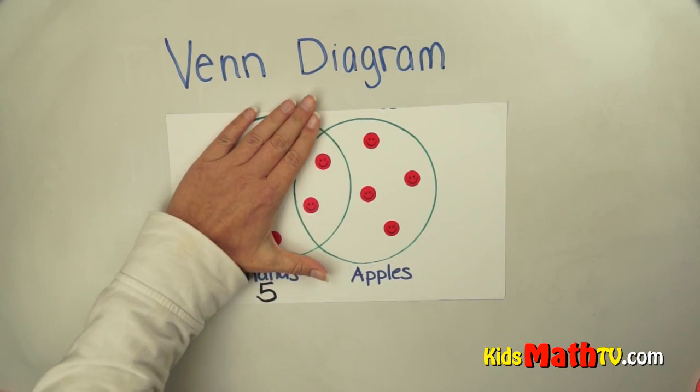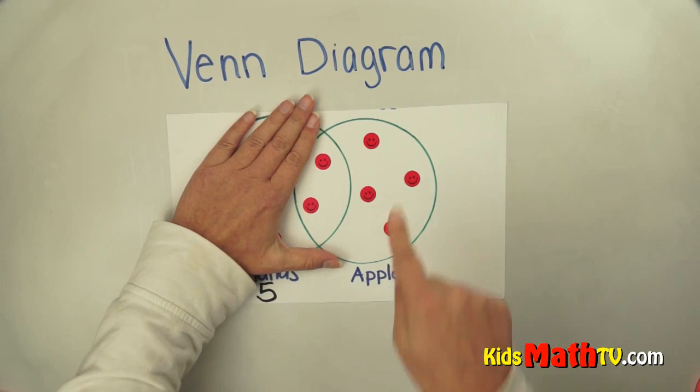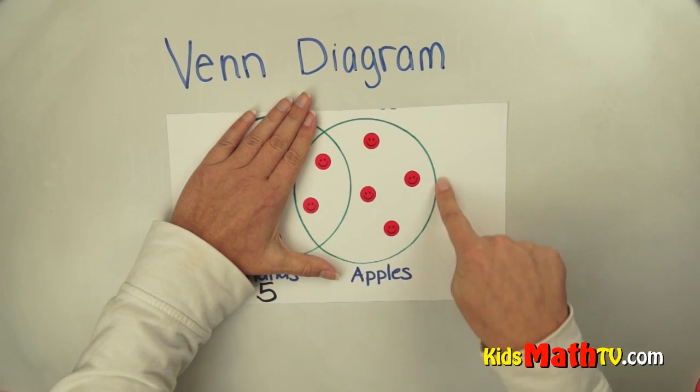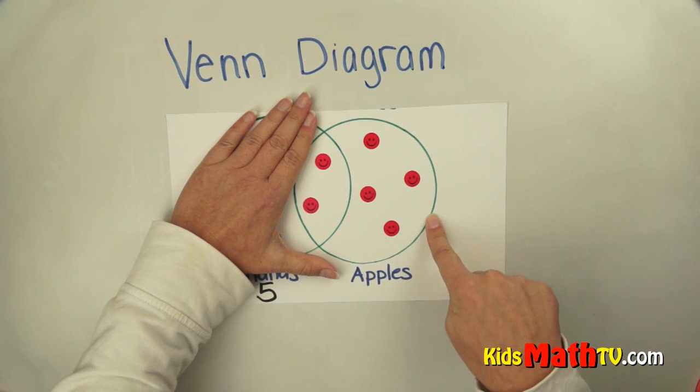Let's look at just the apples. Who likes apples? So this is the apple circle right here. Let's count how many people like apples.